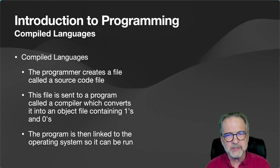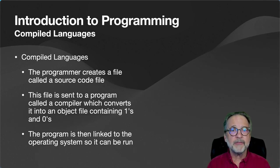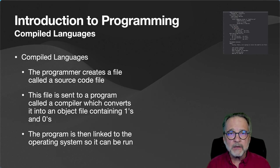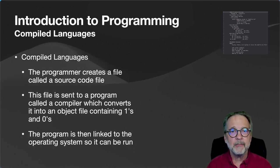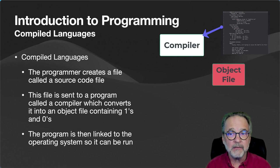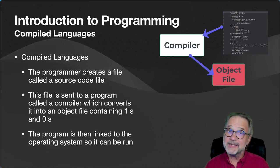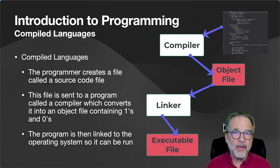With a compiled language, the programmer creates a source code file containing all the language statements telling the computer what to do, sequentially from top to bottom. That source file is sent to a program called a compiler, which converts it into an object file containing ones and zeros. That object file isn't yet ready to run — it must be linked to the operating system object files so it can then be run on that operating system. That's the way it works on every compiled language.